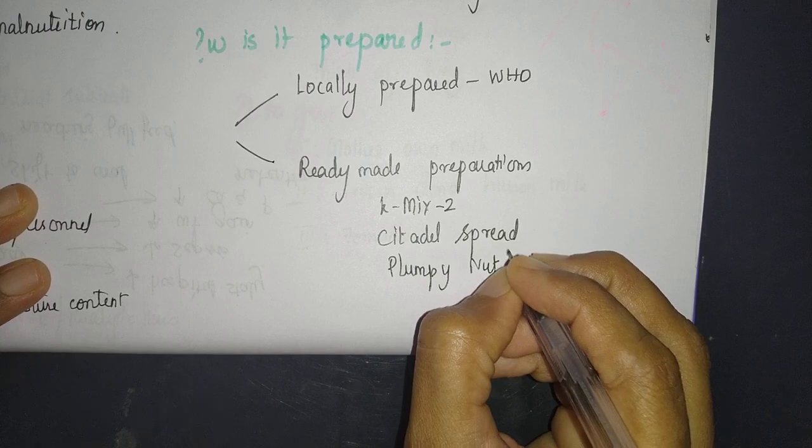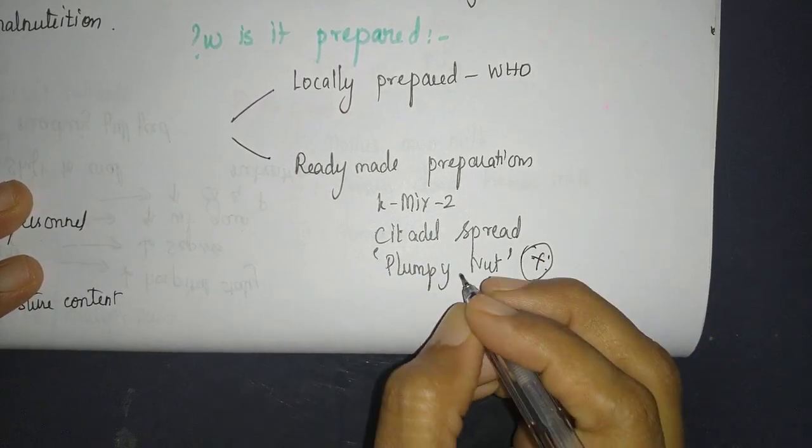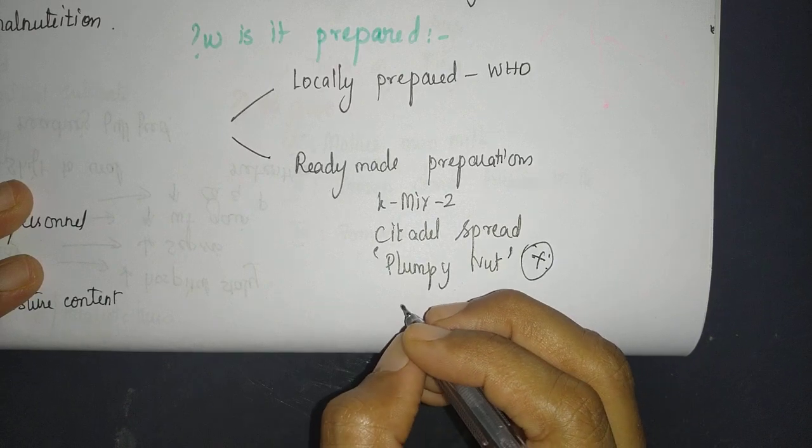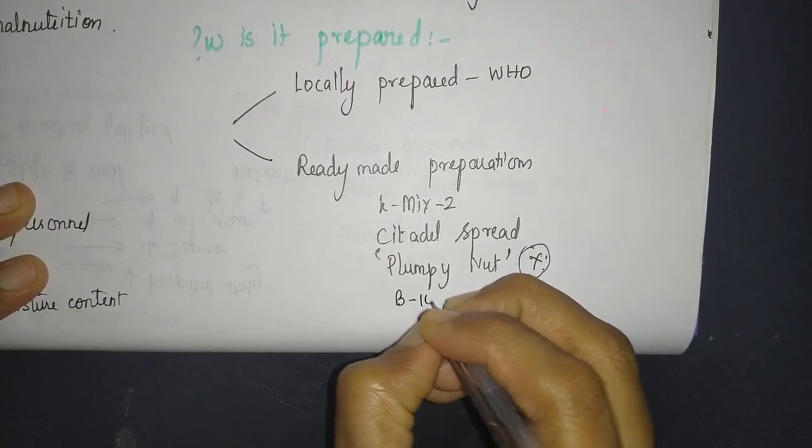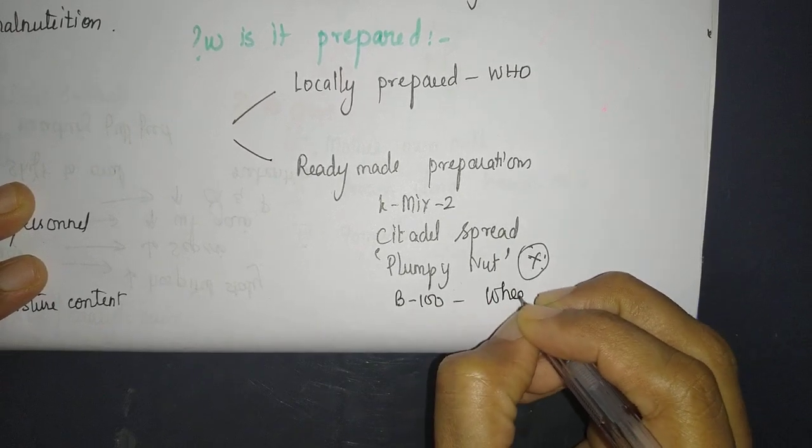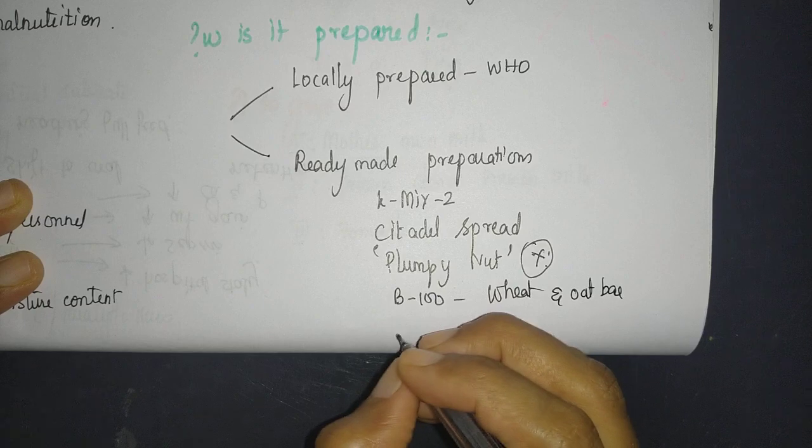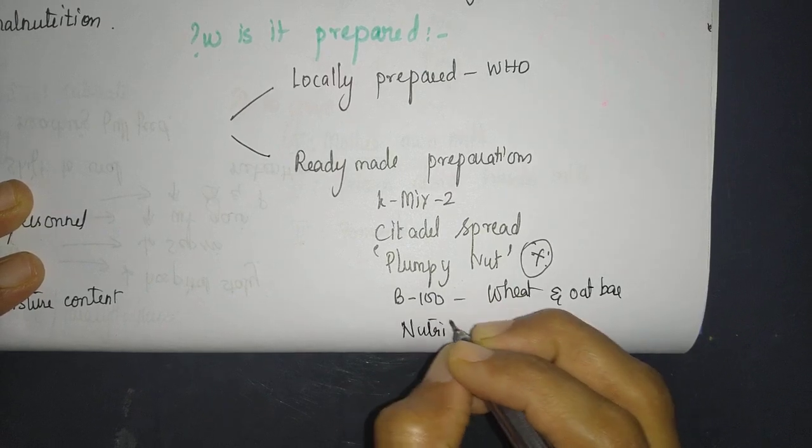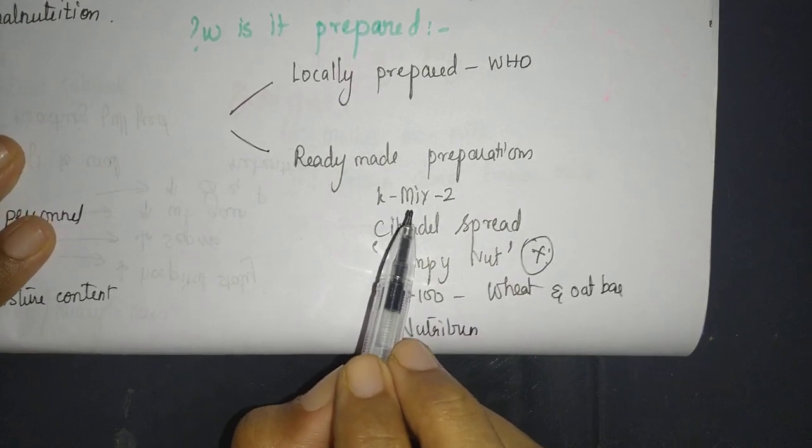Then Plumpy Nut. This is the most common thing that you might have seen, probably. Remember this—it's being imported from France. I'll talk about that in a minute. Then BP-100, which is a wheat and oat bar, and Nutribun, similar to a bun but enriched. These are some examples of ready-made preparations.